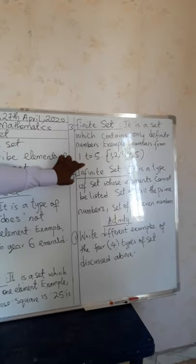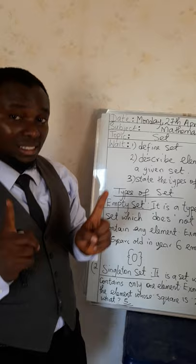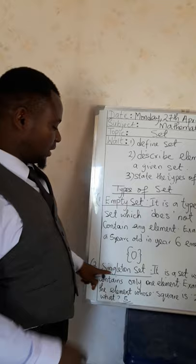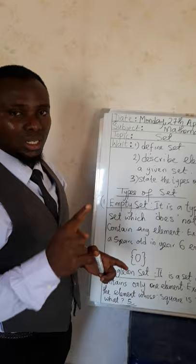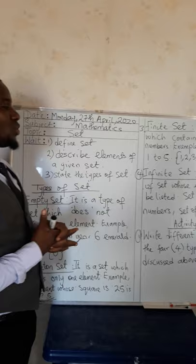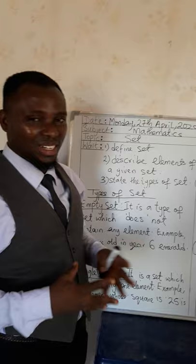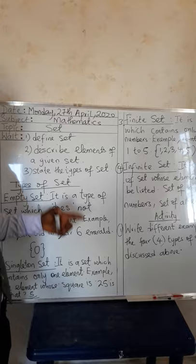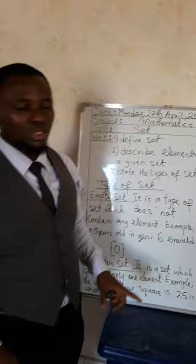The empty set has no element in it — that is why it's called the empty set. The singleton set has just one element, from the word 'single', meaning one. The finite set has definite numbers that are defined, for example from 1 to 5. The infinite set is a type of set whose elements cannot be listed — you cannot name all the elements in this set.